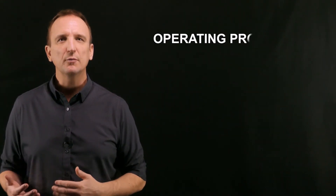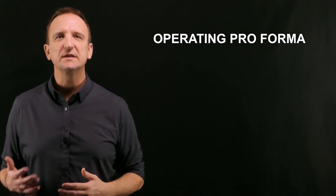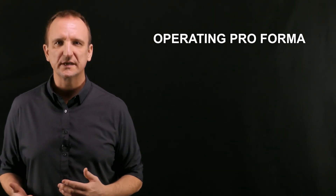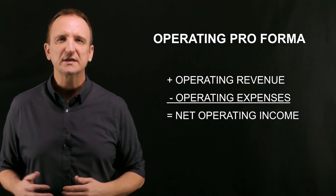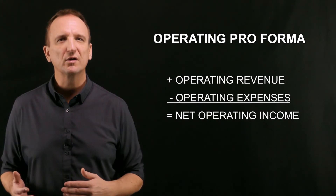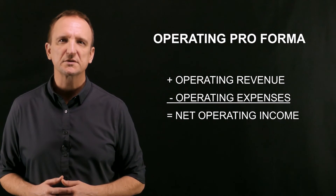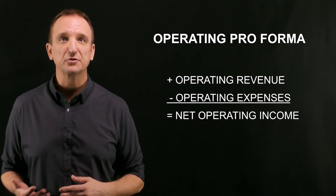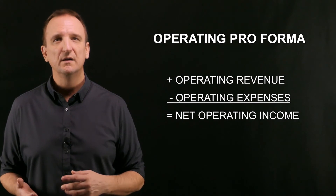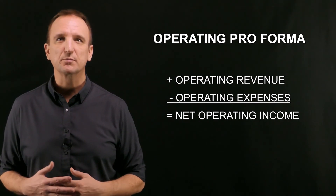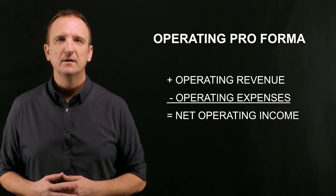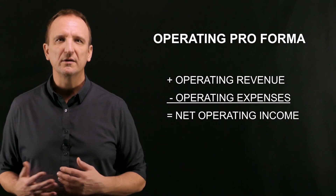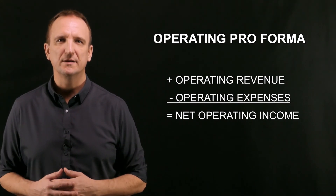I make a distinction between an operating pro forma and an investment pro forma. An operating pro forma is what you would typically see advertised by a seller or a listing agent. This outlines the basic operating revenue and expenses of a property without regard to non-recurring items such as capital expenditures, or below-the-line items such as interest payments on debt financing, non-cash items such as depreciation and amortization. Typically, the bottom line on an operating pro forma is the net operating income.